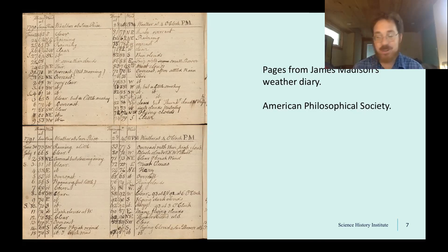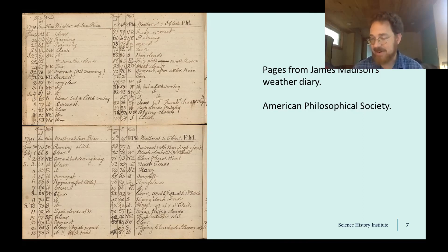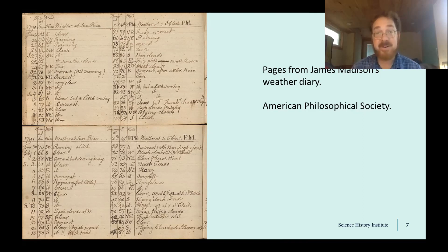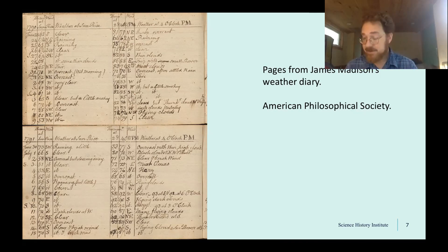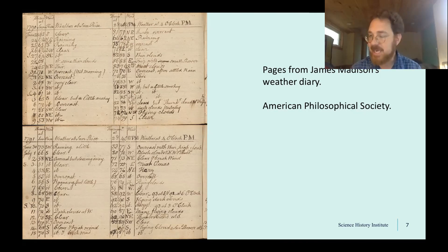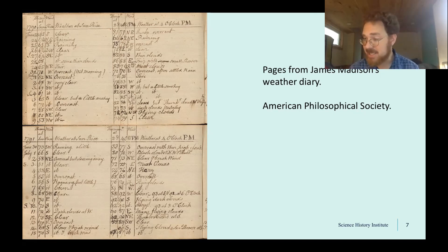Jefferson also badgered his colleague James Madison to stick to the task, and Madison's one-decade-long weather diary is preserved at the American Philosophical Museum, just around the corner from the Science History Institute in Center City, Philadelphia. But these instruments could be expensive, and the value of weather records depends on a long continuous run of measurements using instruments that are calibrated, accurate, and standardized so they can be easily compared.